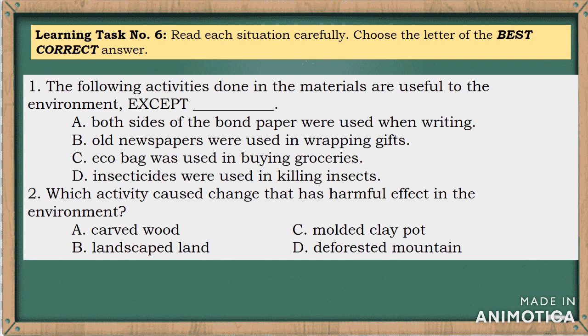Learning Task Number Six: Read each situation carefully and choose the letter of the best correct answer. Question one: The following activities are useful to the environment, EXCEPT: A — both sides of bond paper were used when writing, B — old newspapers were used in wrapping gifts, C — eco bag was used in buying groceries, D — insecticides were used in killing insects. The answer is letter D — insecticides were used in killing insects. Question two: Which activity caused a change that has a harmful effect on the environment? A — carved wood, B — landscaped land, C — molded clay, D — deforested mountain. The answer is letter D — deforested mountain.